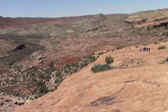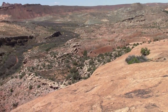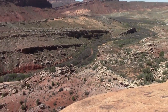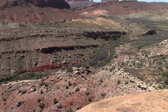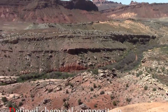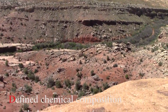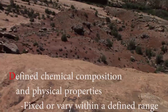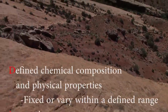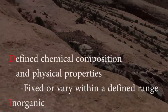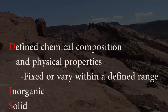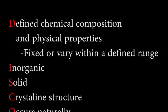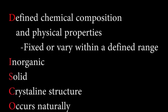We want to start by identifying the most common rocks, but must start even further back looking at the minerals that comprise these rocks. A mineral is defined as having definite chemical composition and physical properties which are generally fixed but can vary within a defined range. They are also inorganic, solid, crystalline — meaning an orderly arrangement of its atoms — and occurs naturally.